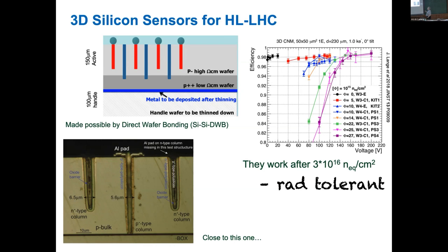The voltage needed to deplete the detector and establish the field configuration goes with thickness squared. Thickness squared of 150 is much larger than thickness squared of 25. So when we need 800 volts to drive planar detectors, here we only need 50 to 100 volts — power goes down immediately. When you put electronics on top, the lower power becomes even more relevant because deep inside the heavily irradiated region, leakage current is so high that power is really the issue — you have to cool it away without adding material.